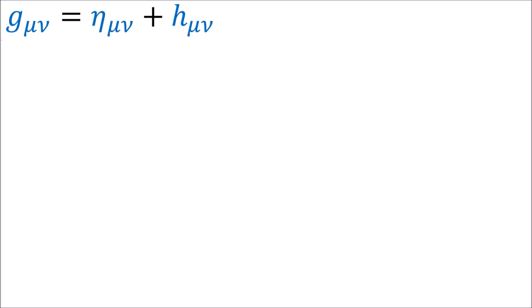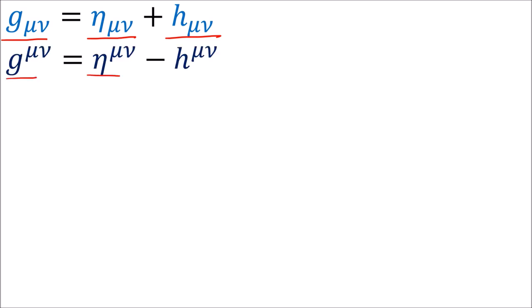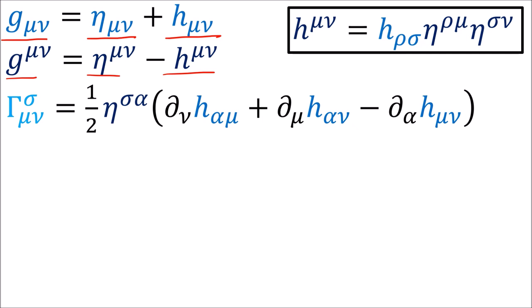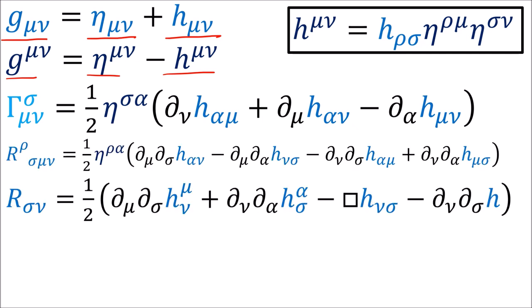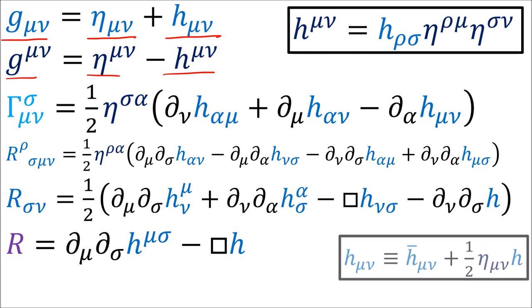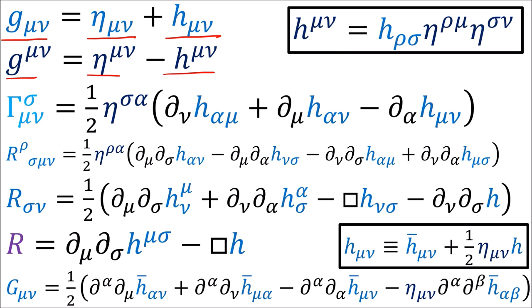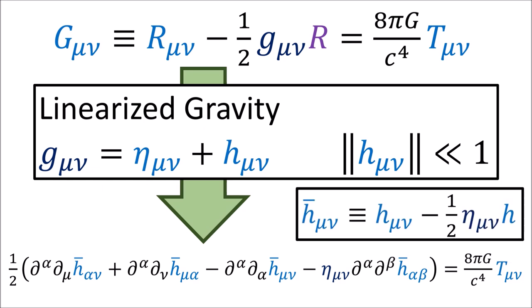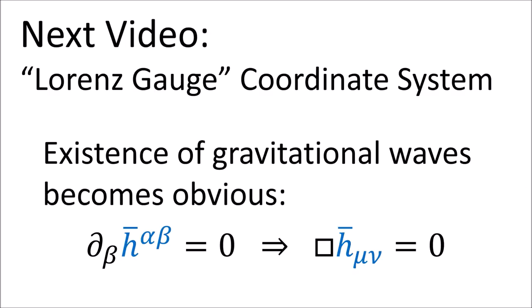So for linearized gravity, the metric G is the Minkowski metric eta plus a small change H, where the derivatives of H are small. The inverse metric G is the inverse eta minus H with raised indices. We also have formulas for the connection coefficients, the Riemann tensor, the Ricci tensor, the Ricci scalar, and using the definition for the H-bar components, we have this formula for the Einstein tensor. We can now write the Einstein field equations for linearized gravity. In the next videos, we'll discuss how to pick a coordinate system in linearized gravity that makes the existence of gravitational waves more obvious, where we can plainly see the metric tensor obeys the wave equation.